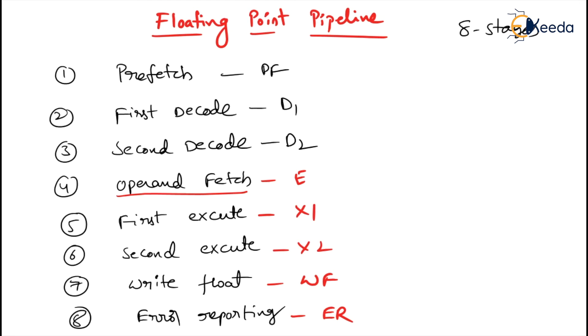So this covers the integer pipeline and the floating-point pipeline. Next we will go for branch prediction. Until then, thank you.